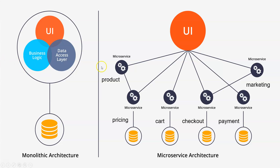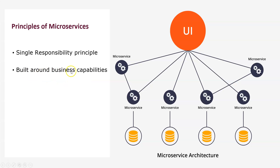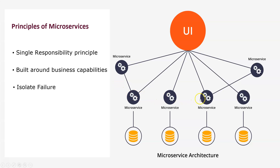A microservice needs to follow some principles. The first is the single responsibility principle — each microservice is responsible for one task. The next is built around business capabilities, meaning the microservices work together to achieve your business objective. The next principle is isolate failure — if one microservice goes down it will not impact the other microservices.